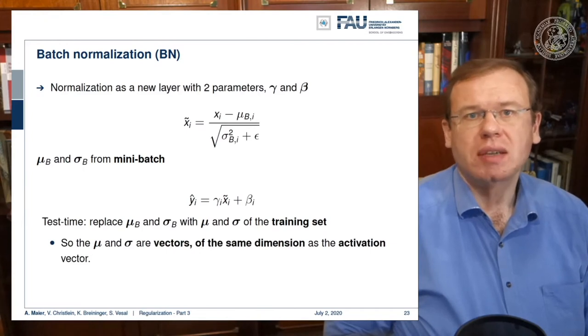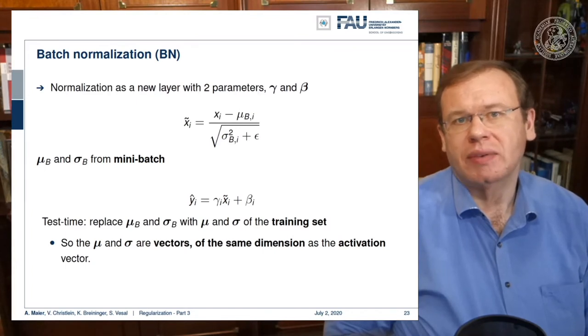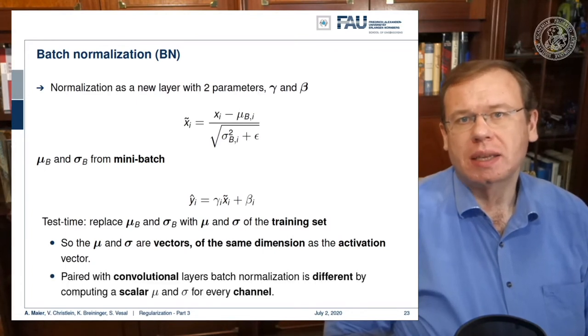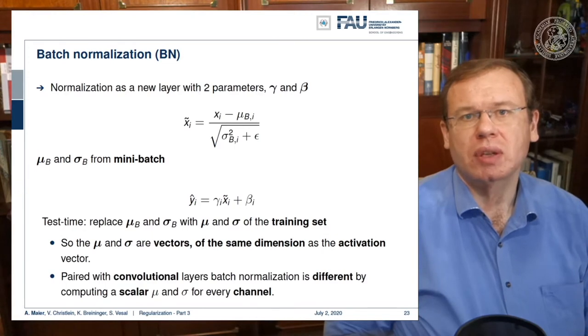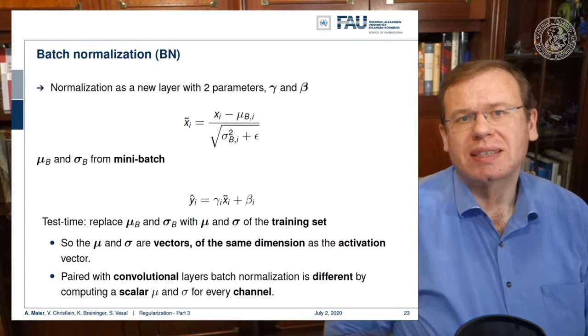Of course, mu and sigma are vectors and they have exactly the same dimension as the activation vector. Typically, you pair this with convolutional layers. In this case, the batch normalization is slightly different by using a scalar mu and a scalar sigma for every channel. So there's a slight difference if you use it in convolution.